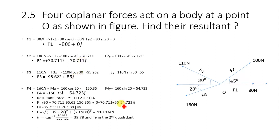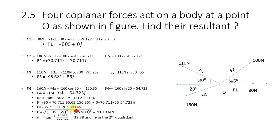Note: the value 90 was a mistake; F1 is actually 80 newtons. The final resultant components are −75.259 newtons along the x-axis and 70.988 newtons along the y-axis.